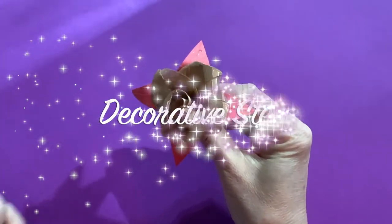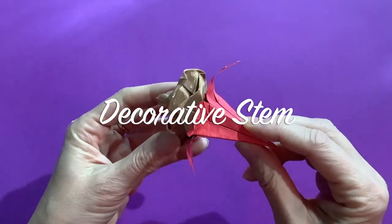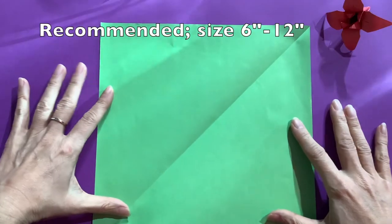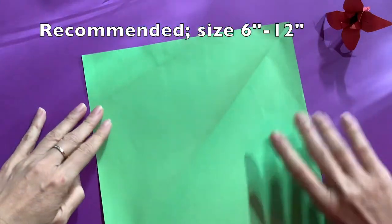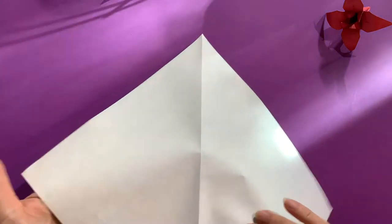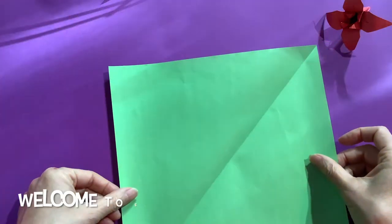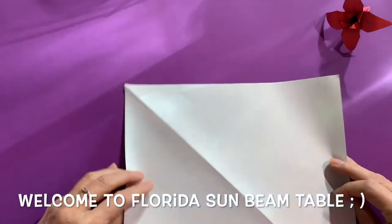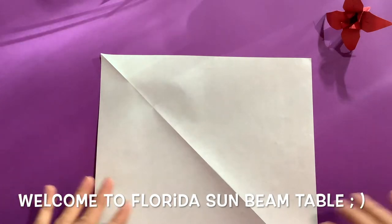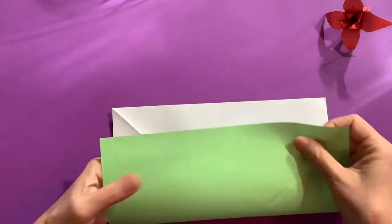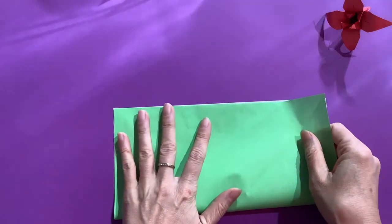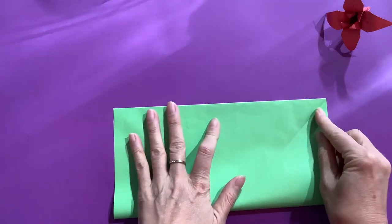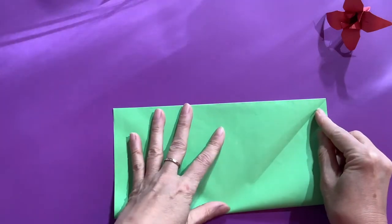I call this decorative stem. I have 10 inches square. One side is white and other side is a color. Starting out with white side up, we are going to make this into preliminary fold which is one of the basic folding patterns.